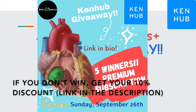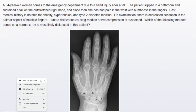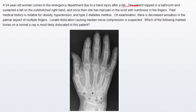Let's get started with the first question. A 54-year-old woman comes to the ER due to a hand injury after a fall. The patient slipped in the bathroom and sustained a fall on an outstretched right hand. Since then she's had pain in the wrist and numbness in the fingers. Past medical history is notable for obesity and hypertension. On examination there is decreased sensation in the palmar aspect of multiple fingers. Lunate dislocation causing median nerve compression is suspected.